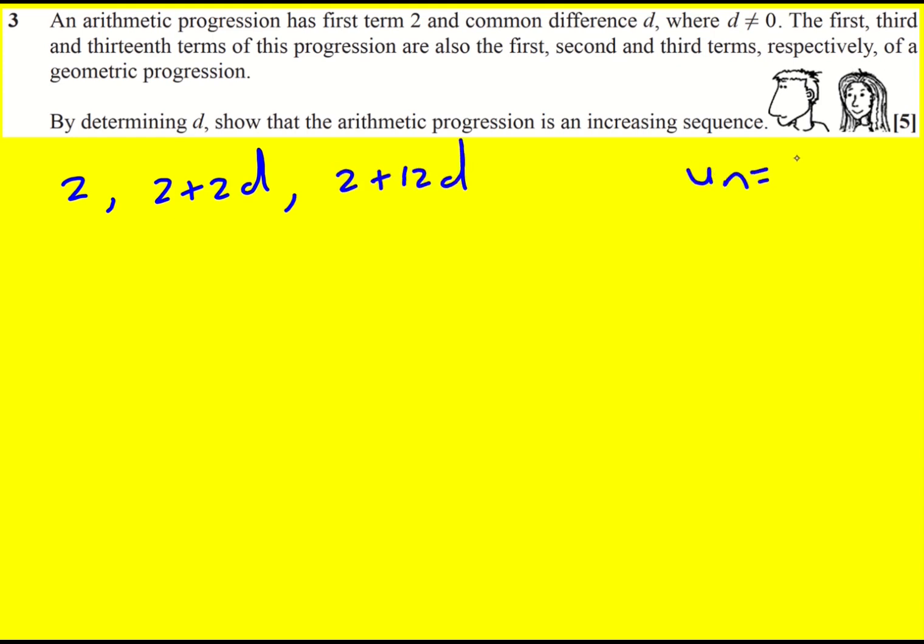You could use the nth term formula, un is a plus n minus 1d. You have to learn that, and it kind of actually follows from understanding this idea really, that we're always adding, whatever the term number is, we're adding one less number of differences.